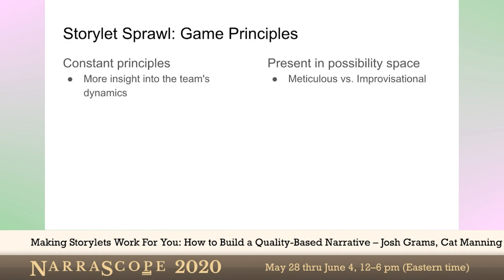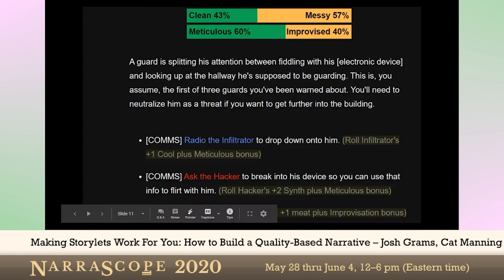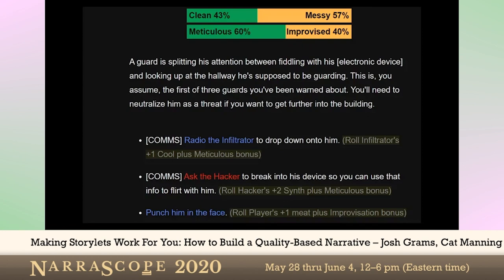Let's dive in and take a look at this chunk of story. In this example, our team has to get past a series of guards. We're going to need three successes here to get through to the next chunk of story. There are several options: you can ask the hacker to break into the guard's personal device so that when you lean over the counter to flirt with them, you can target the specific weird thing they're secretly into. Or you can have set up your infiltrator to be crawling through the vents and drop down at your signal, knocking out the guard. Or you can straight up punch the guard in the face. The first two lean toward the meticulous style of player expression, and the last will lean toward the improvisational, as the gray lines will show you.